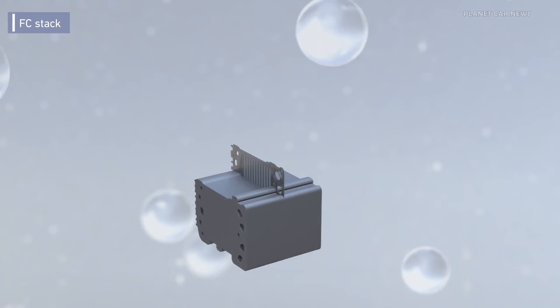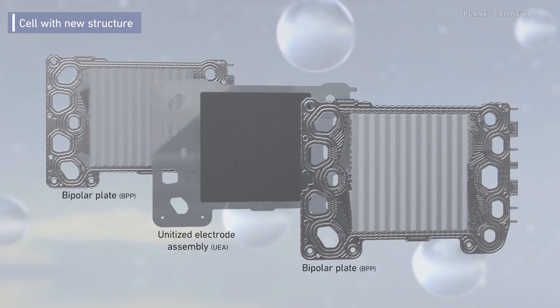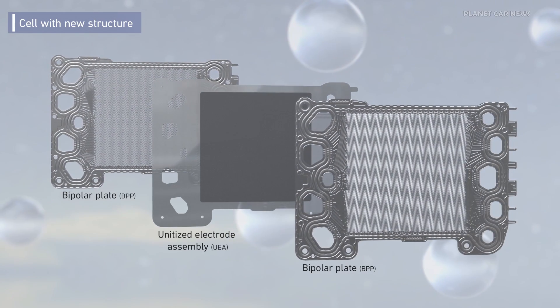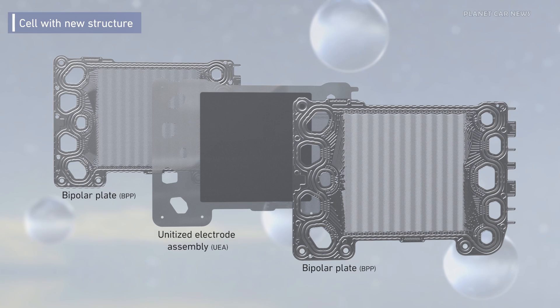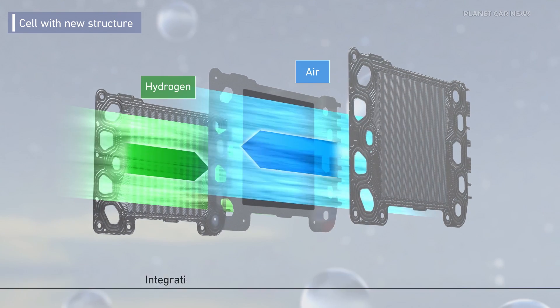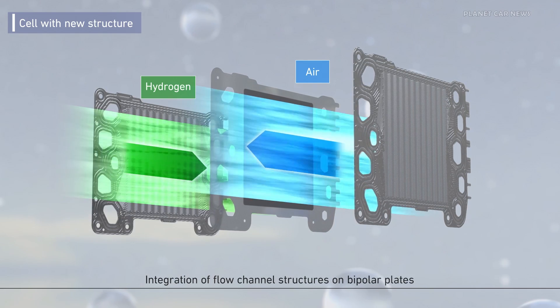The system was evolved by a new cell structure. The cell is formed by three plates, two bipolar plates and a unitized electrode assembly. Simple structure has been realized by integrating flow channels on bipolar plates.